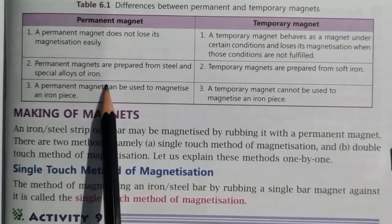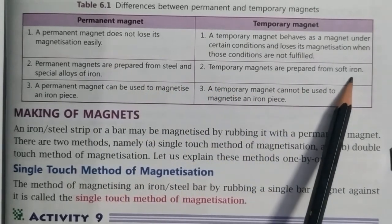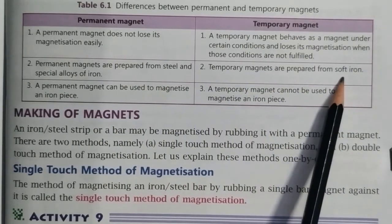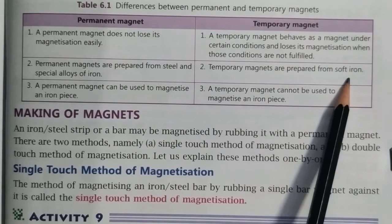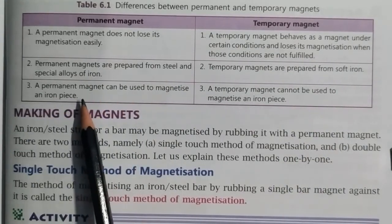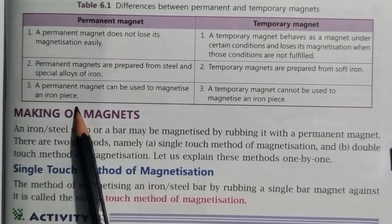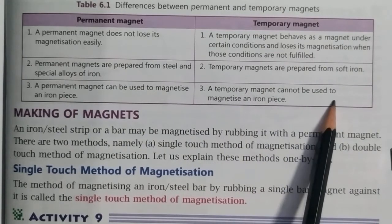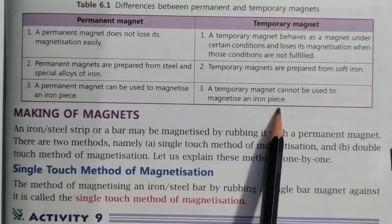Permanent magnets are prepared from steel and special alloys of iron, while temporary magnets are prepared from soft iron. Soft iron means an iron piece which loses its magnetism easily. Permanent magnets can be used to magnetize an iron piece, whereas temporary magnets cannot be used to magnetize an iron piece.